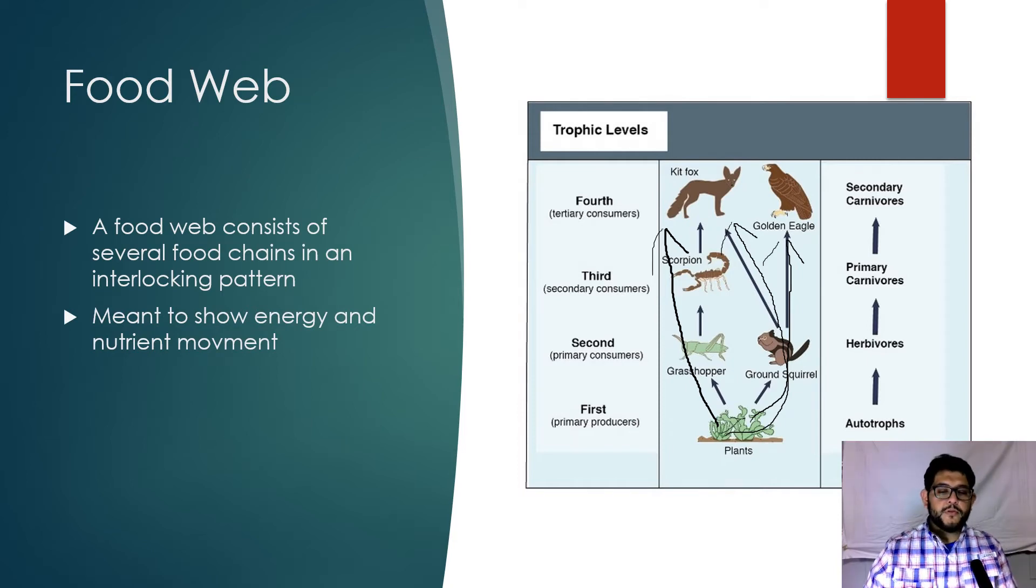As you can see these are the trophic levels: your primary producers, your primary consumers, secondary consumers, tertiary consumers. You can see how the autotrophs go to the herbivores and then the carnivores, the primary carnivores and the secondary carnivores. This shows the nutrient movement all the way through.